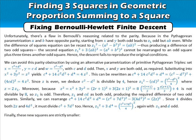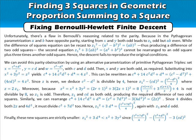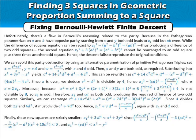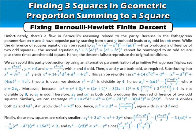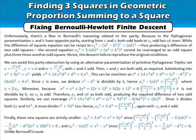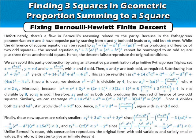Finally, these new squares are strictly smaller: z₁² + 3d⁴ is smaller than x² + 3y², and z₁² - (cd)² is smaller than x² - y². Unlike Bernoulli's route, this construction reproduces the original form with odd variables and strictly smaller values. Therefore it iterates to give an infinite descent, proving there are no non-trivial solutions.